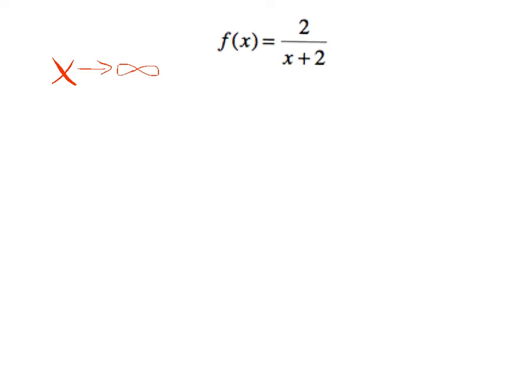f of x is an example of the first part of the rule. Notice the numerator has degree 0, the denominator has degree 1. Well, whenever the denominator has higher power than the numerator, the horizontal asymptote is going to be located at the horizontal line y equals 0.